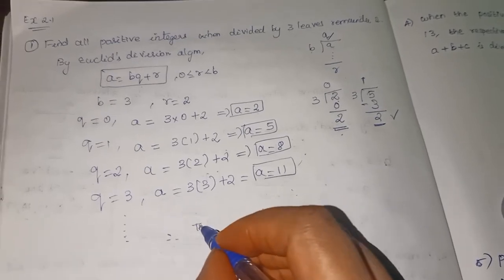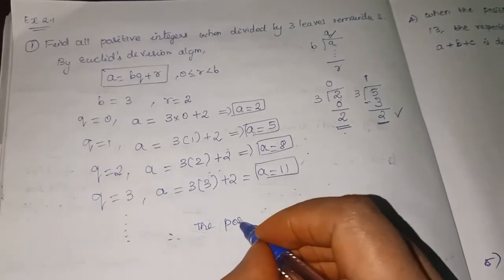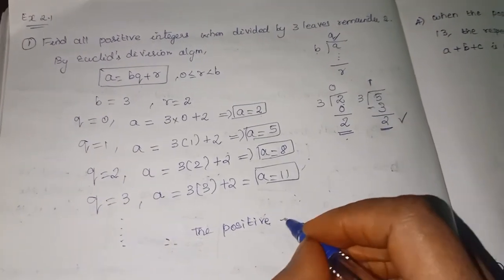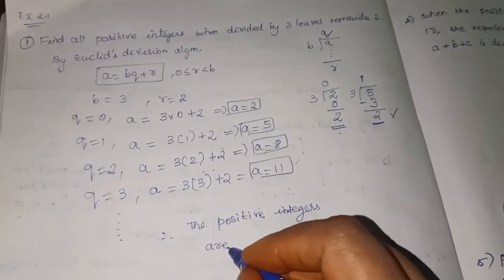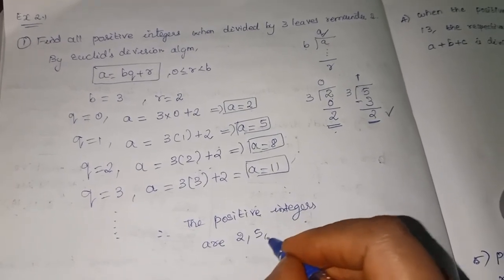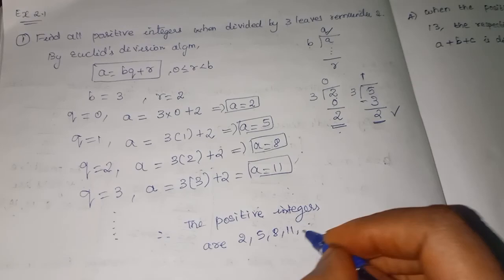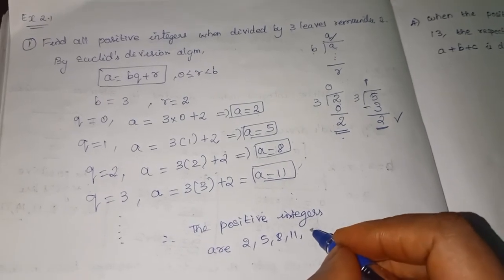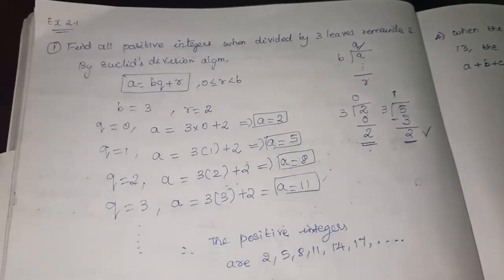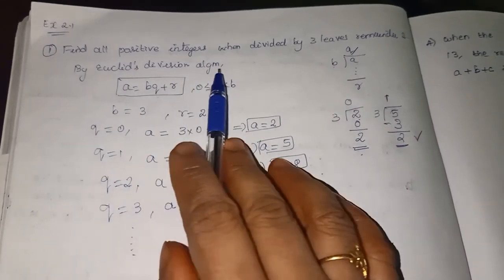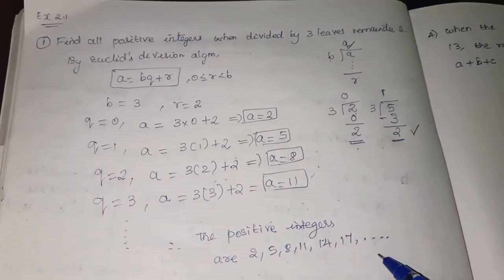Therefore the positive integers are 2 comma 5 comma 8 comma 11 comma it continues, right? 14 comma 17 and so on. This is a very easy question. So we found all the positive integers.